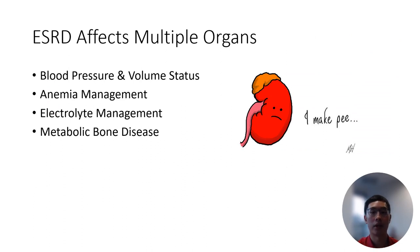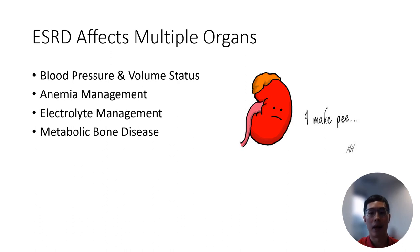Before we talk more about dialysis, I wanted to discuss some complications of end-stage renal disease that we frequently see both in patients and in the outpatient clinic. In kidney failure, it is not unusual that multiple organ systems have derangements since the kidneys are an integral part of blood pressure management, anemia management, electrolyte management, and metabolic bone disease.